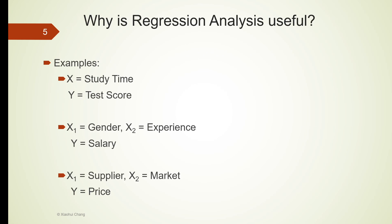Here are some more examples where regression analysis can be useful. Time spent studying the subject is very likely to be related to the test scores. We may be very interested to see whether an employee's gender and work experience affect his or her salary. The price of a certain product can be influenced by its supplier and market where it's being sold. In the first example, there is only one independent variable, one x here. So this regression model is also called a simple linear regression. In the second and third models, there are two independent variables. So these models are called multiple linear regression models.